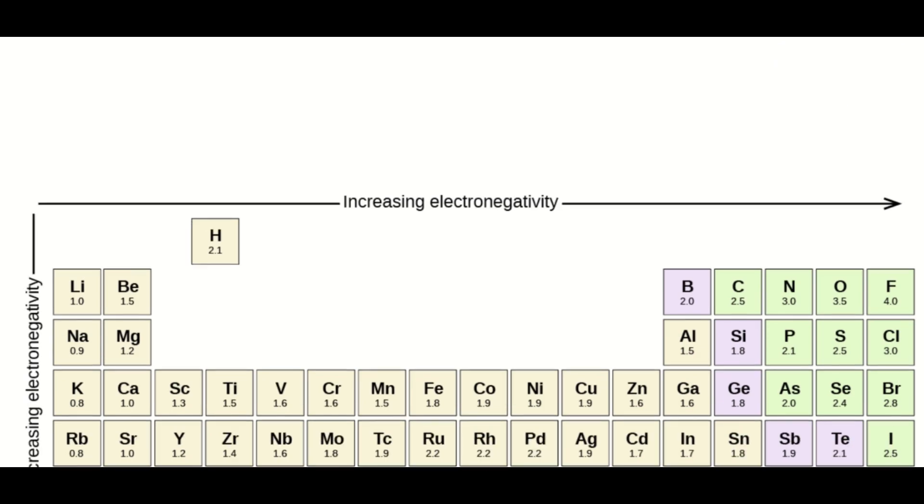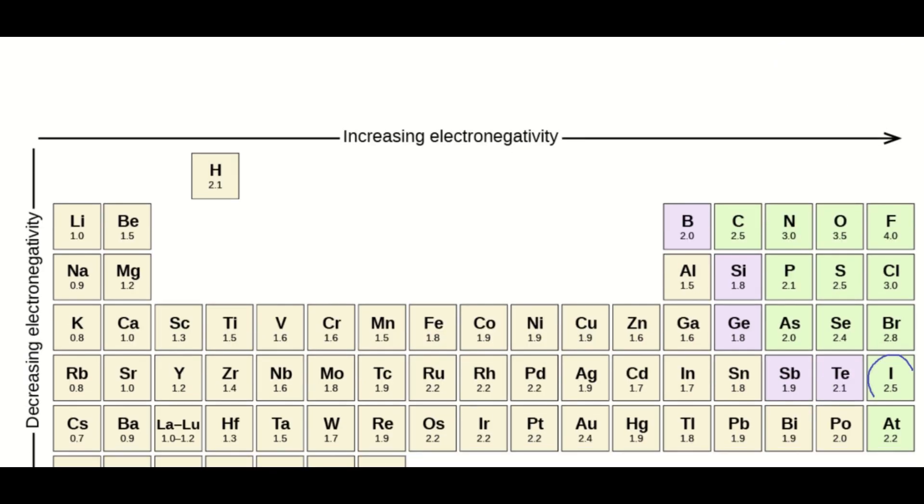Iodine is less electronegative, so we're going to put that in the center and surround it with the 4 chlorines.